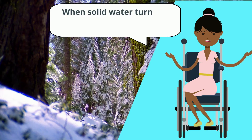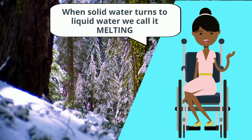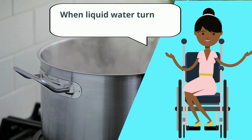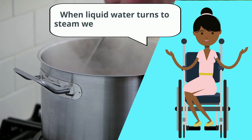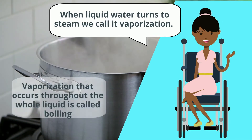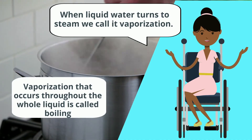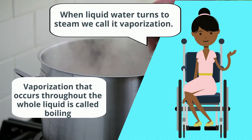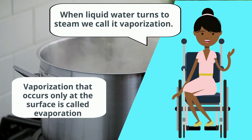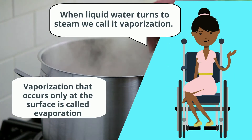When solid water turns to liquid water, we call it melting. When liquid water turns to steam, we call it vaporization. Vaporization that occurs throughout the whole liquid is called boiling. Vaporization that occurs only at the surface is called evaporation.